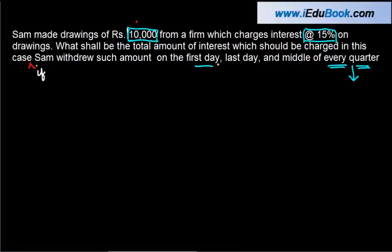There are three different cases: the drawings are made on the first day of every quarter, the drawings are made on the last day of every quarter, and the drawings are made on the middle of every quarter. I'll do it for the first day of every quarter and then I'll use the formula to compute these other two.